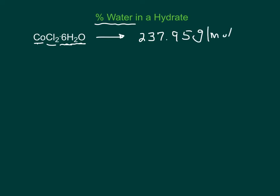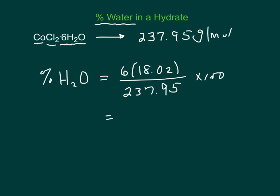So percentage of water, we just want part over whole. So what part of this compound is water? Well, there's 6, and each water weighs 18.02. That's the part. Now divide it by the whole times 100, and you should get that this is 45.44% water.